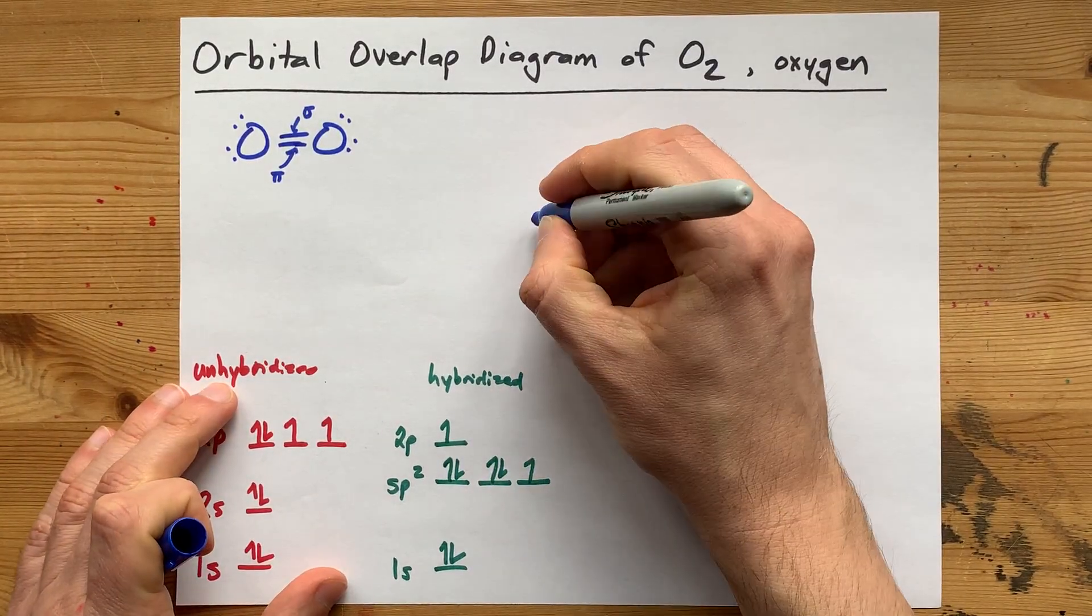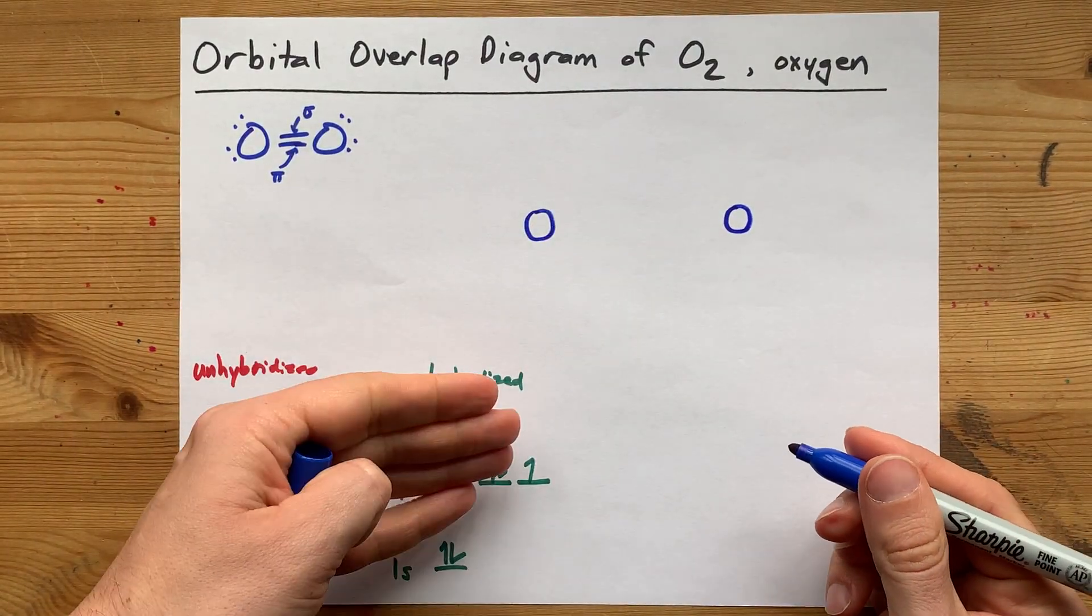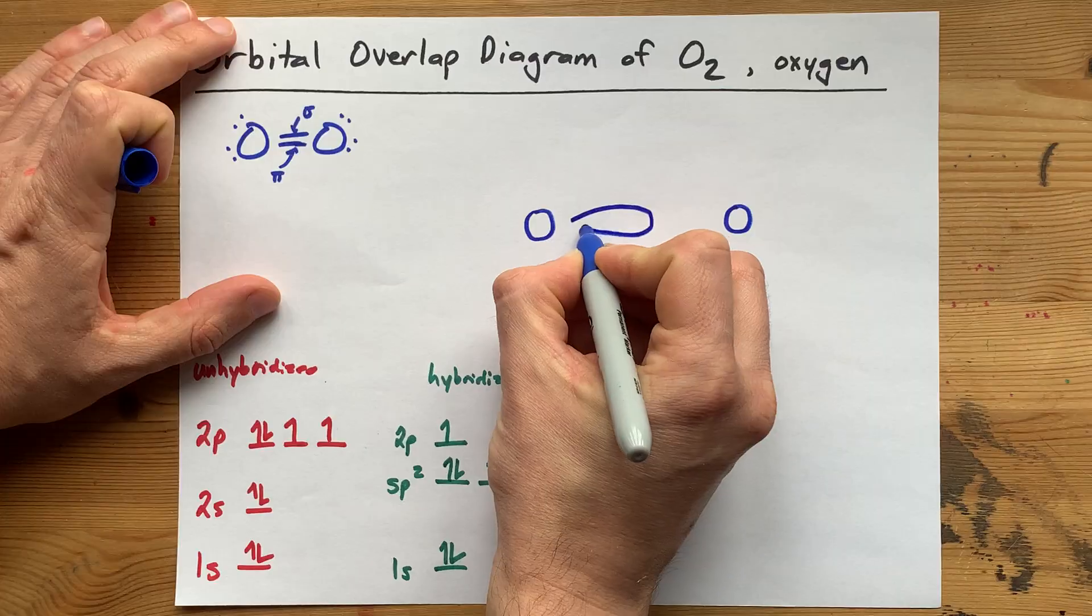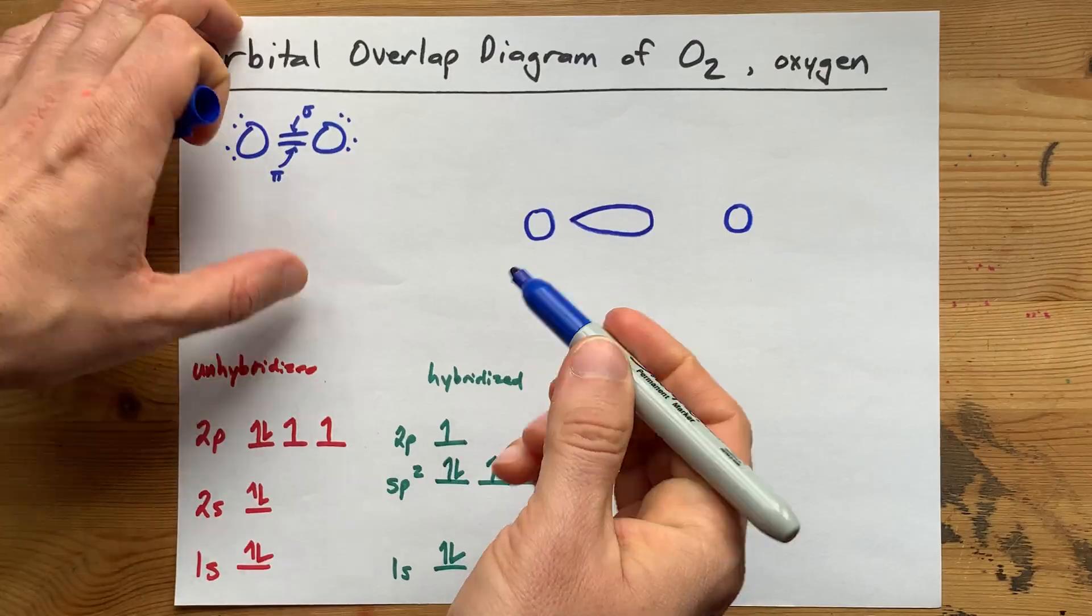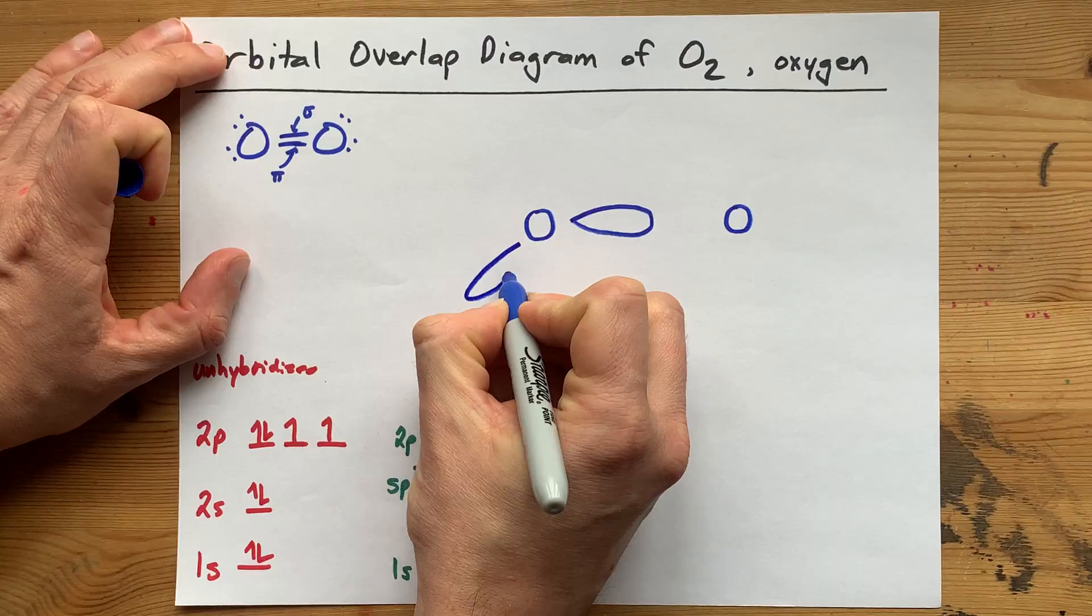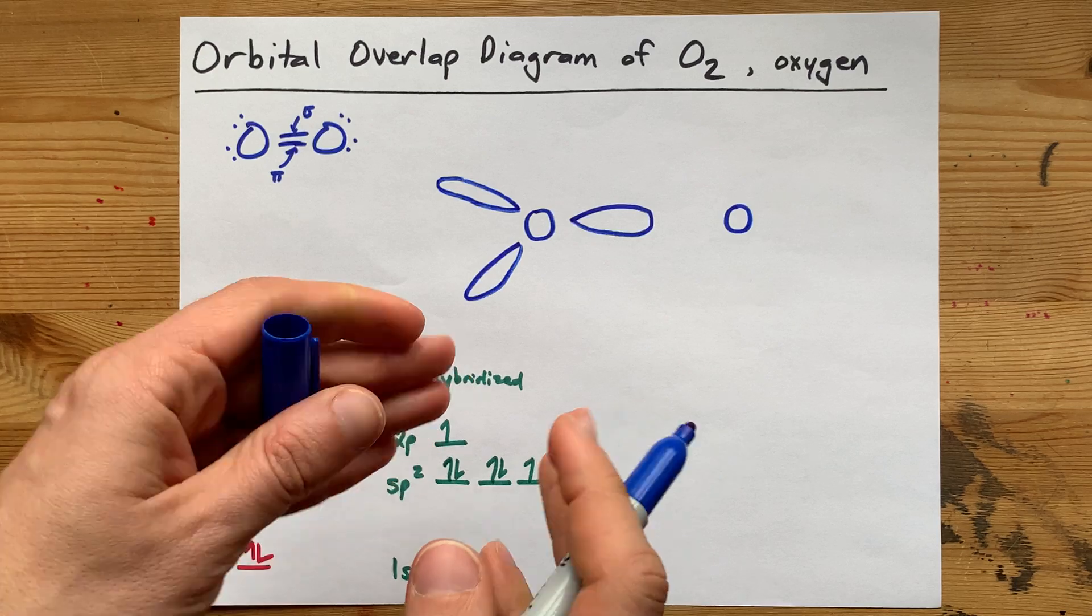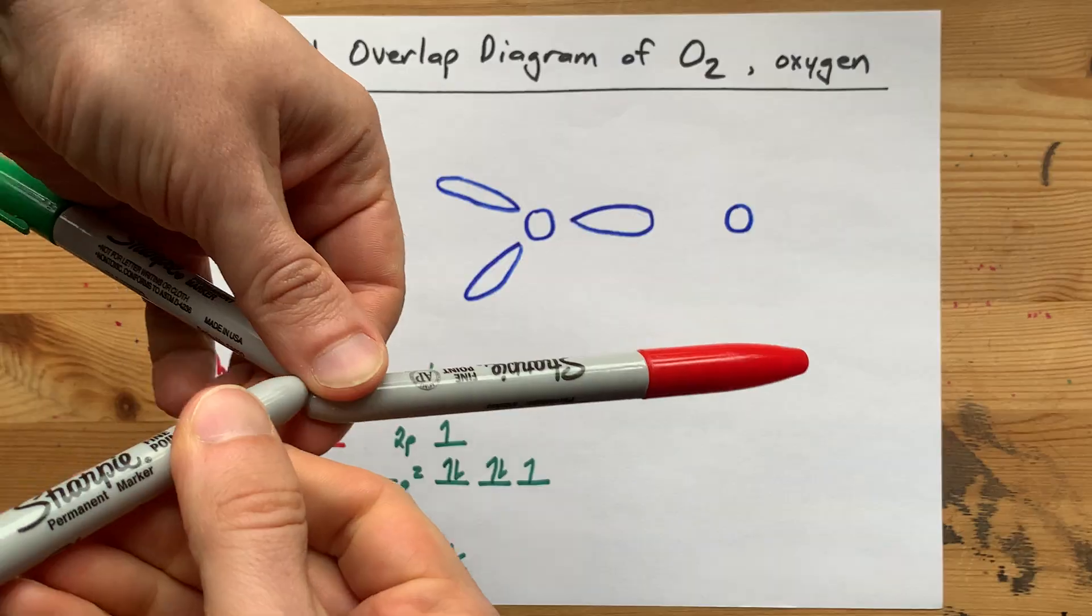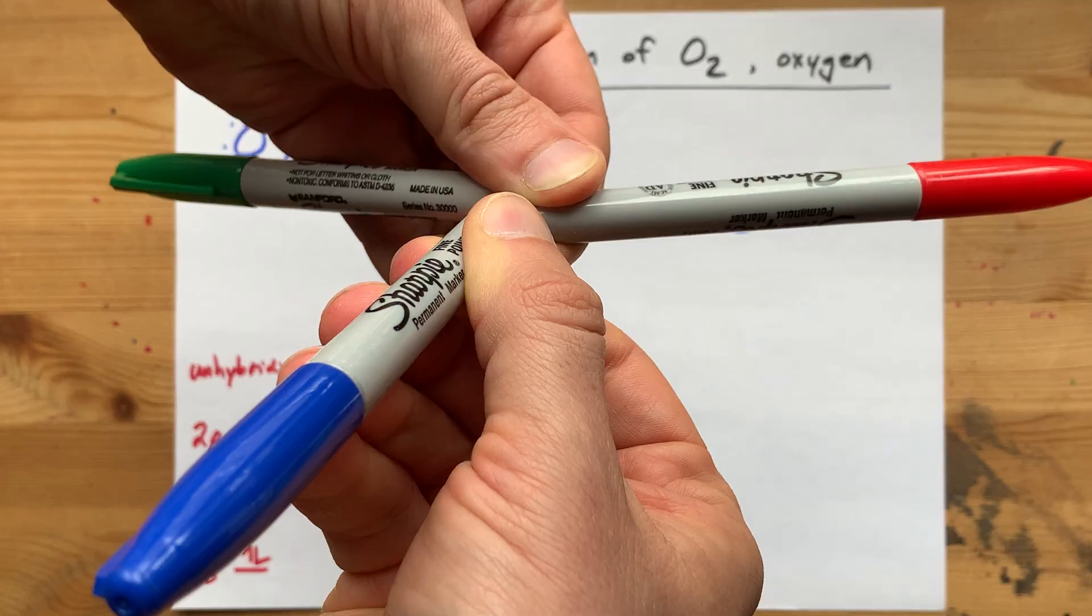sp2 hybridized orbitals arrange themselves in a trigonal planar way around each oxygen. So I can put my O here, and I can put my other O here, but now I need trigonal planar hybrid orbitals. I'm going to draw one coming out this way, straight to the right from this oxygen. And I'm going to try to draw the other two as though they're coming out of the page and going into the page, adding some three-dimensionality to this. These three hybrid orbitals are arranged something like this. There's one straight to the right, one going backwards, and one coming out at you.